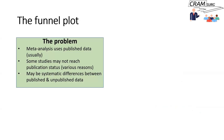Now moving on to the funnel plot. One of the problems with meta-analysis is that you're only using published data, and there are many studies that may have been completed but for one reason or another don't get published. A common reason is that studies don't get published when there's no obvious difference in outcomes between two treatments.